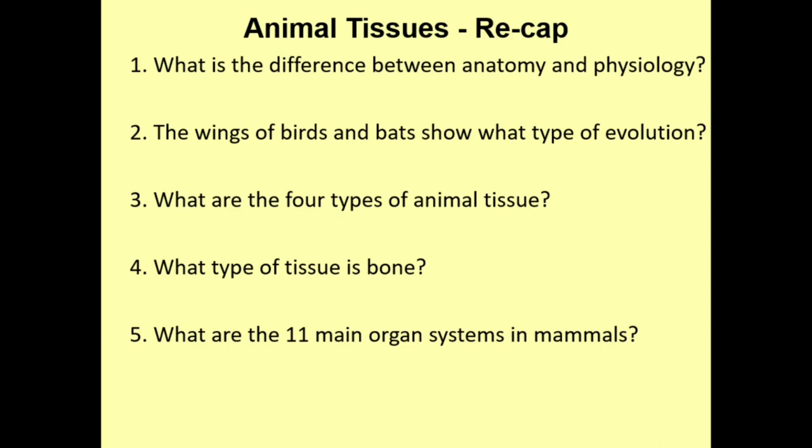That brings us to the end of this introduction to animal tissues. Let's do a quick recap with five questions. Question one: what is the difference between anatomy and physiology? Question two: the wings of birds and bats show what type of evolution? Question three: what are the four types of animal tissue? Question four: what type of tissue is bone? Question five: what are the 11 main organ systems in mammals?